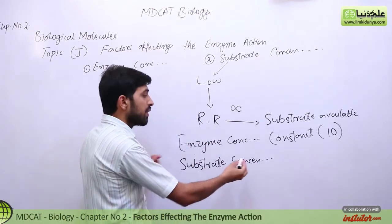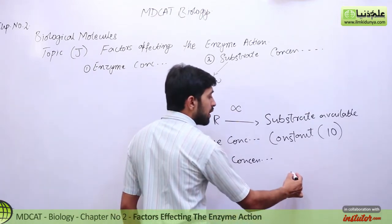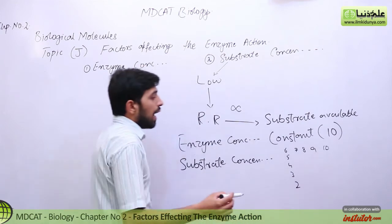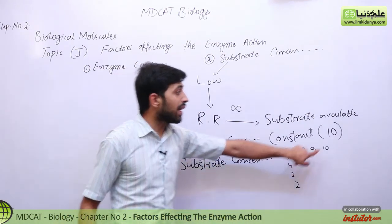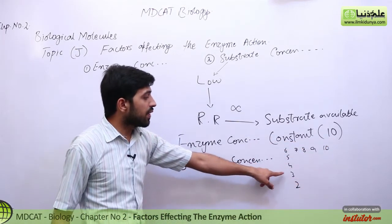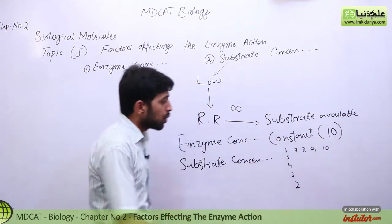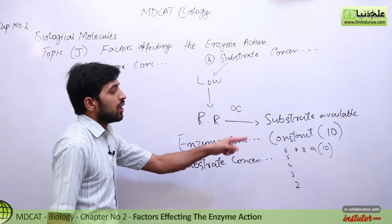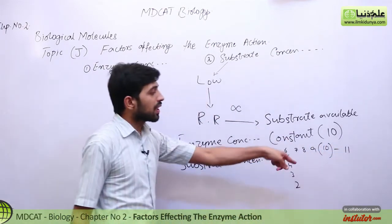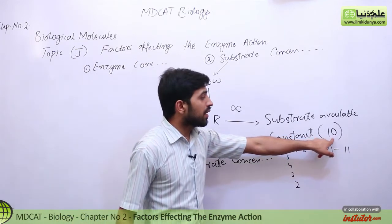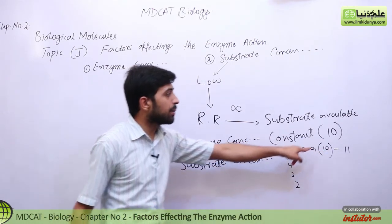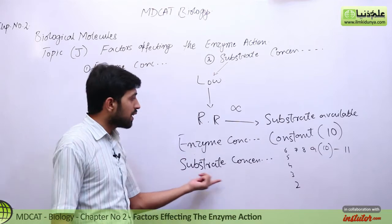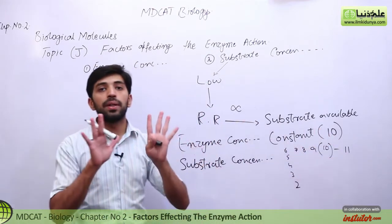For example, we increase substrate concentration from 2 to 3, 4, 5, 6, 7, 8, 9, and 10. At each level, ten enzymes are available. When substrate concentration reaches 10 and enzyme concentration is also 10, all active sites are fully occupied. When we go to 11 substrates, there are no free active sites left. So for that additional substrate, no active site is available, and the reaction rate stops there.